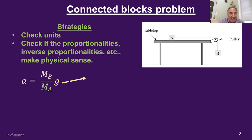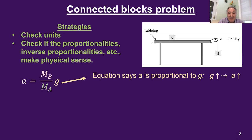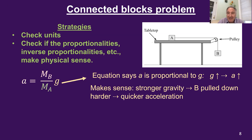Let's start with the direct proportionality in the equation between the acceleration and little g. The equation says that block B's acceleration is proportional to g, meaning if g is increased — say by repositioning this setup on Jupiter — then the acceleration goes up. You'd expect that on Jupiter, block B is pulled down harder due to stronger gravity and would accelerate more quickly. So it makes physical sense that if g is increased, the acceleration of the system is greater. That's not something nonsensical about this equation.